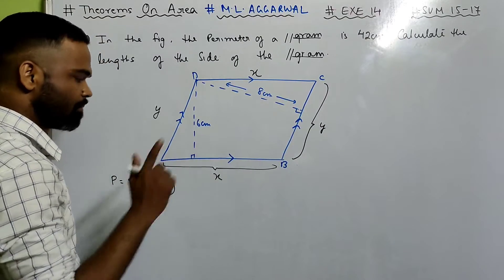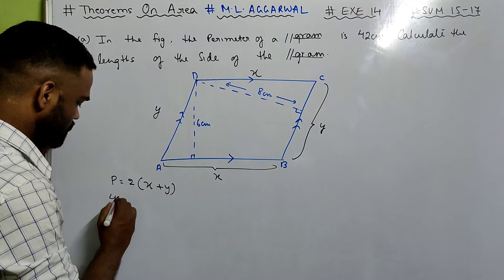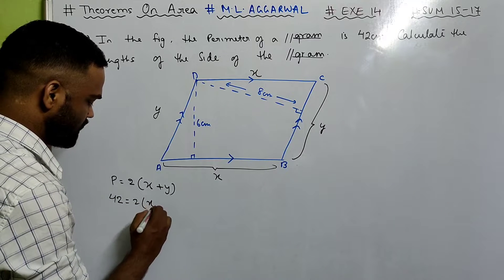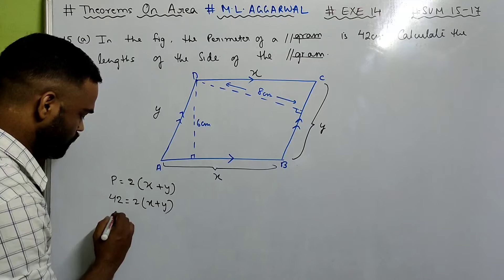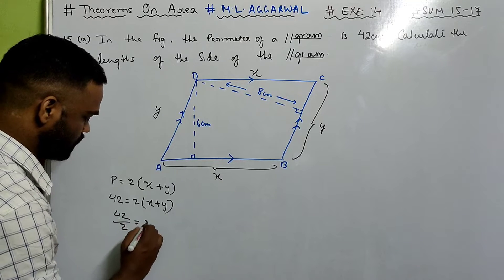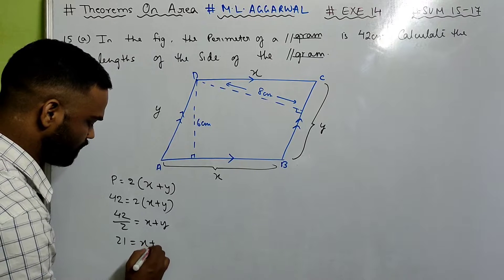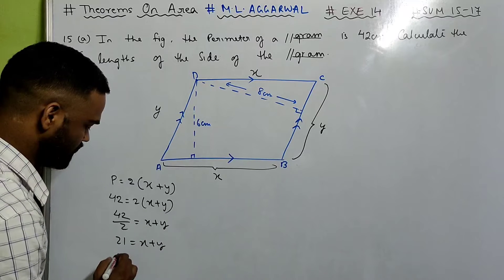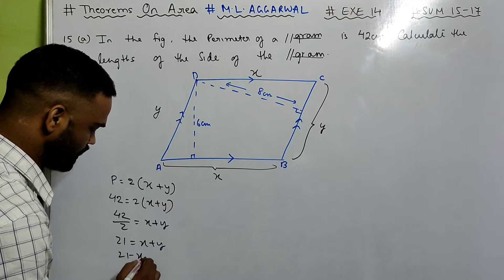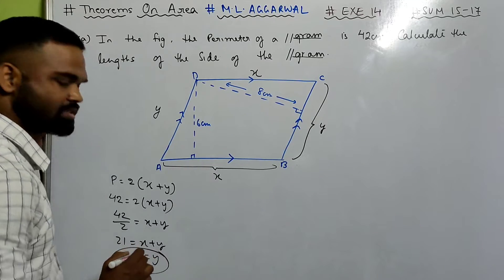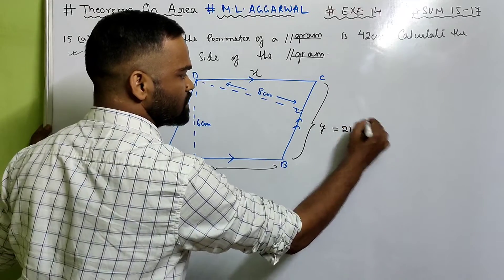So perimeter will be 2 times (X + Y). Now, perimeter is given to us as 42. So 42 equals 2(X + Y), which means 42 divided by 2 equals X + Y. So 21 equals X + Y, which means Y equals 21 minus X.